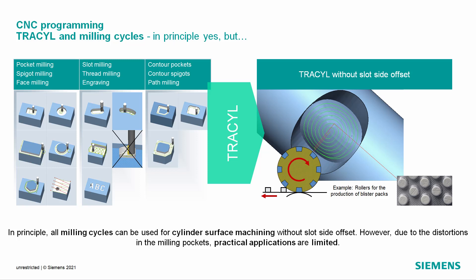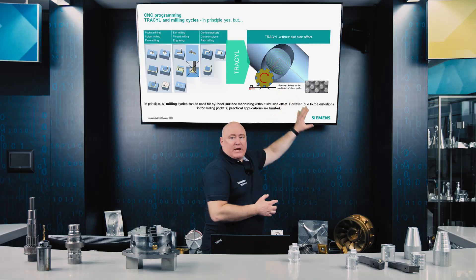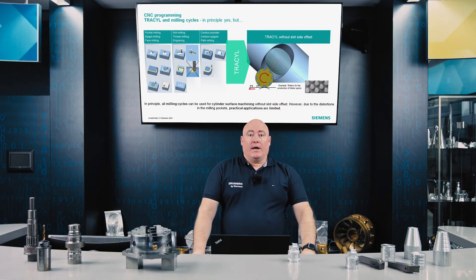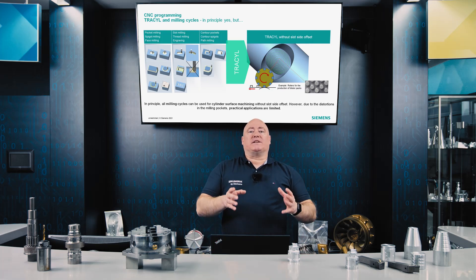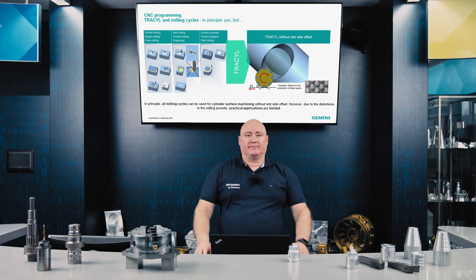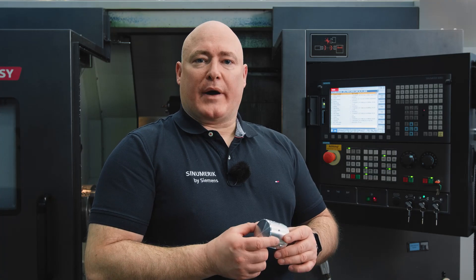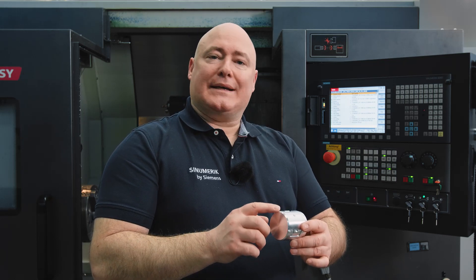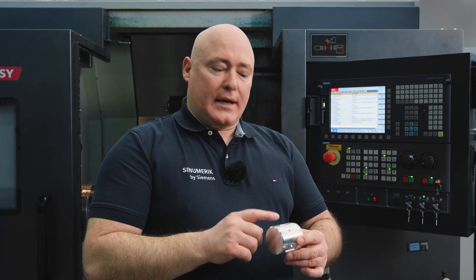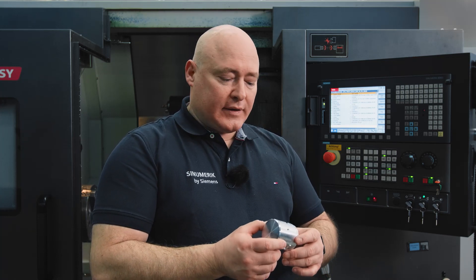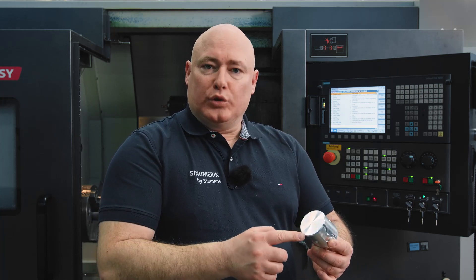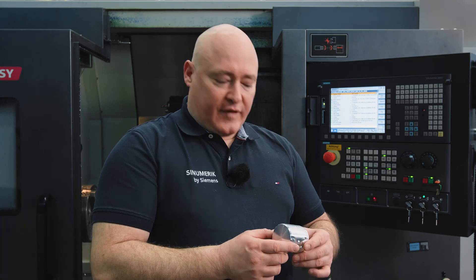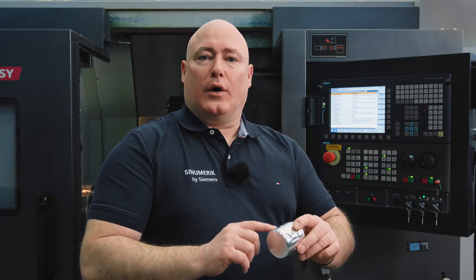A typical application example for TRAS-CIL without slot-side offset are rollers for the production of blister packs. In our practical session, we'll be demonstrating the production of four workpieces, two on the turning machine and two on the milling machine. Let's take this first example of a cylindrical part. In this case, three slots are typically machined in the peripheral surface in the turning-milling process. With TRAS-CIL, the machining includes three slots, each offset by 120 degrees from each other, and corresponding holes on the peripheral surface.